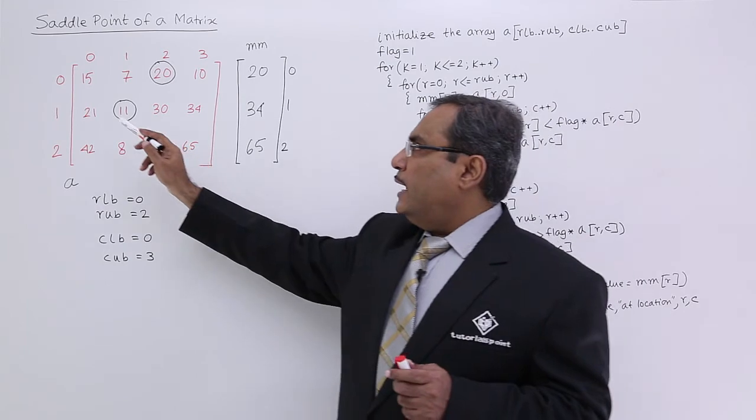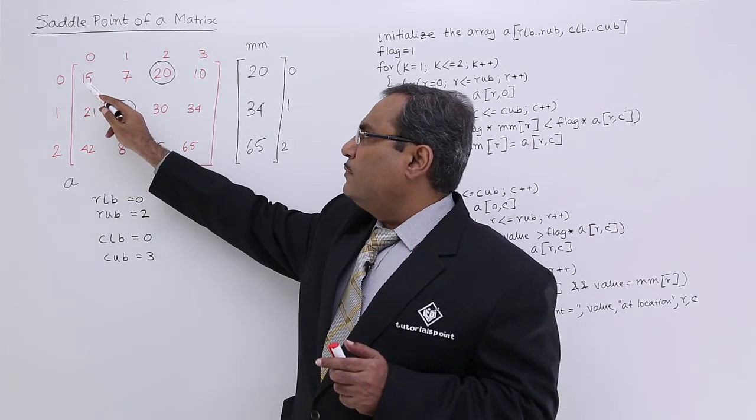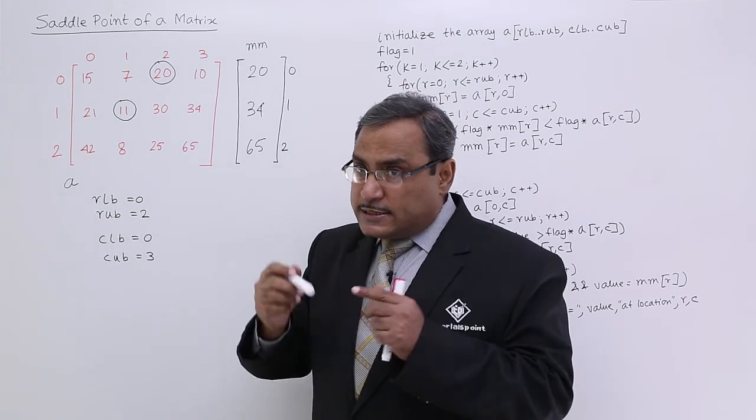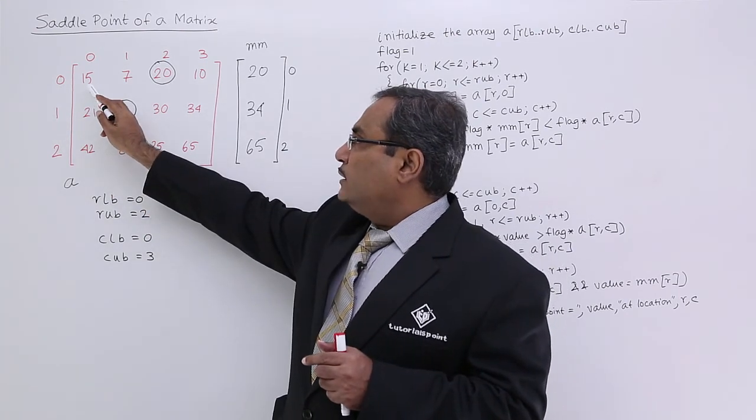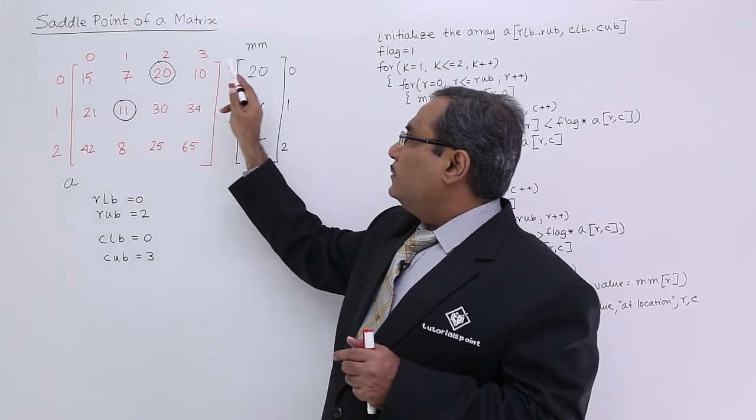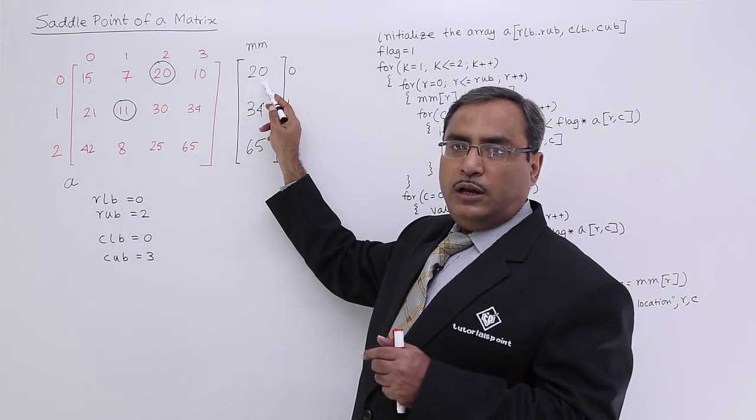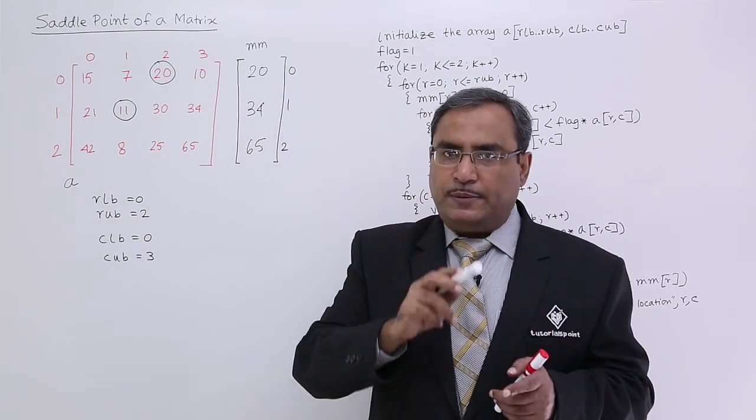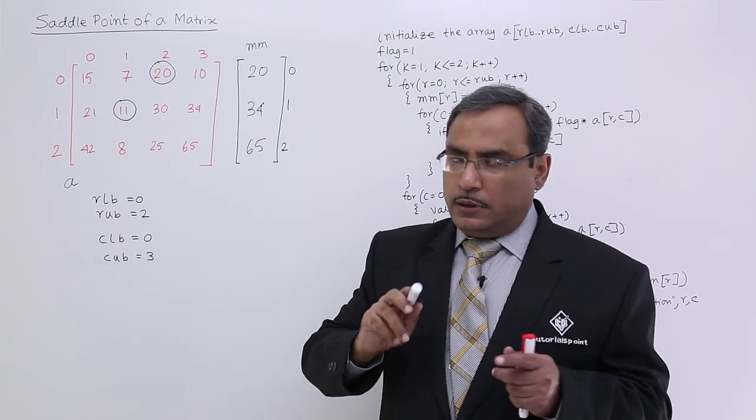Then I shall find out the minimum of a certain column. Then in the same loop, I shall check whether the corresponding minimum is matching with this particular value kept in mm. If they are matching both using AND logic, that means that is the saddle point.